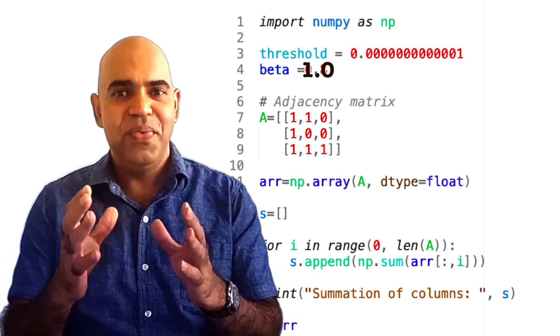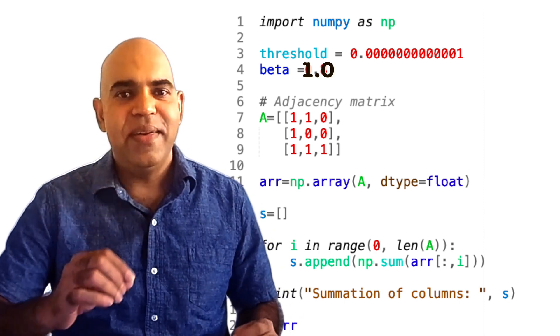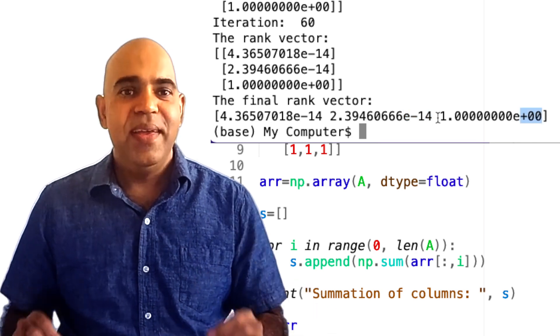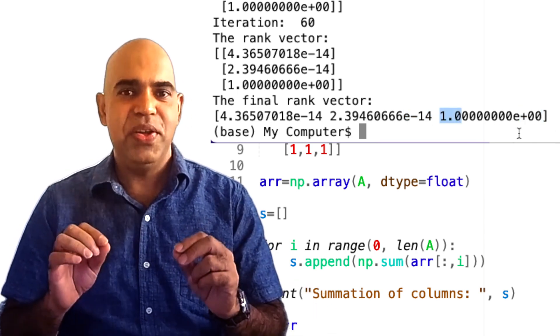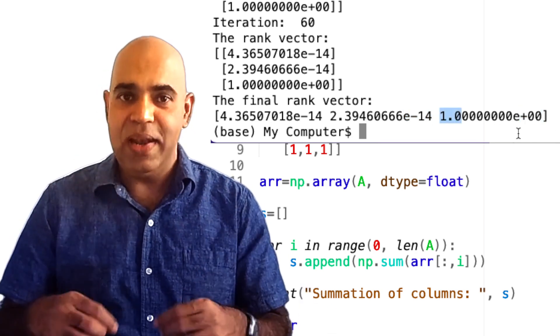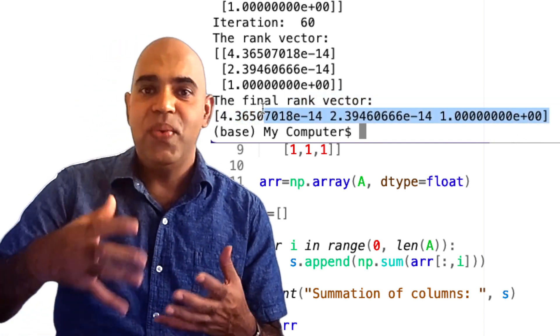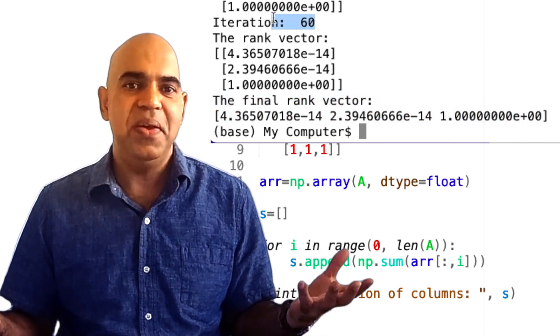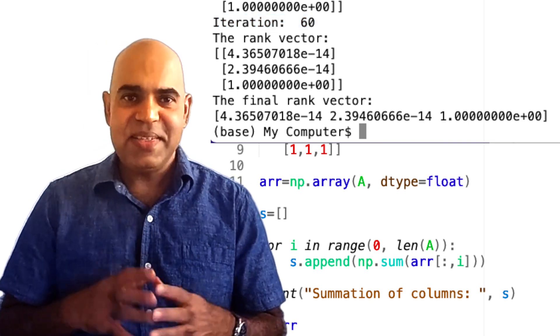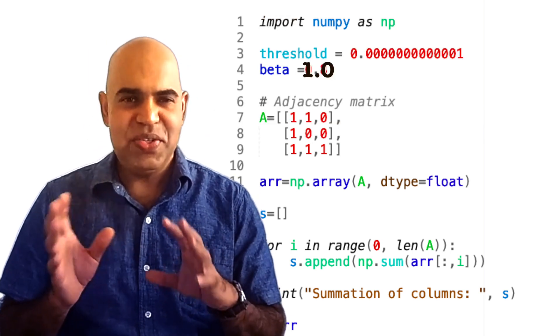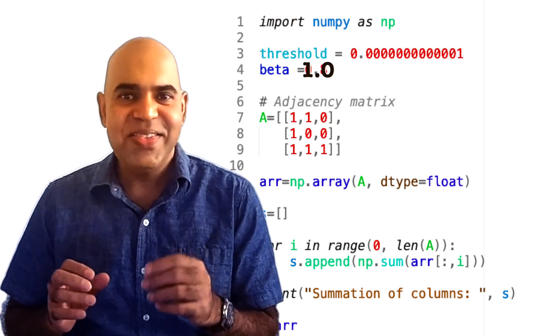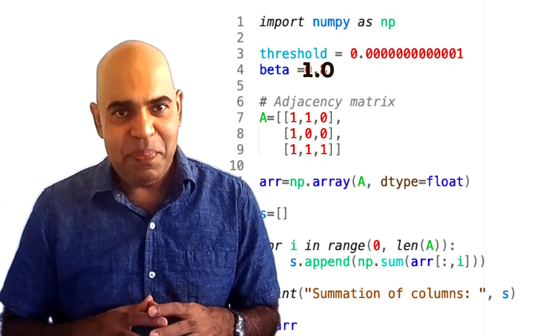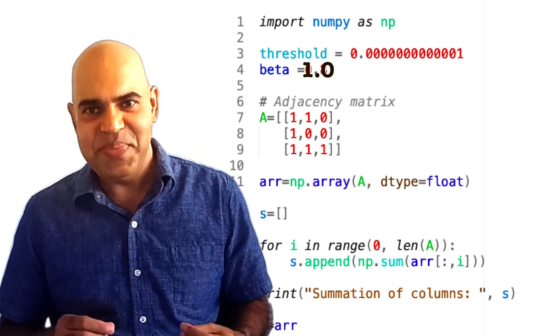A beta value of 1 indicates a scenario where there is no teleportation. In other words, surfers would continue clicking on links indefinitely without ever jumping to a new page at random. In reality, this is not the case. Surfers often get bored or lost and teleport to a new web page without following a hyperlink.